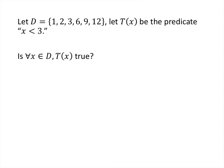Now we're looking at the same set but with quantified statements. The upside-down A symbol means 'every element,' so 'for all x in D.' Here we have T of x, which represents the statement 'x is less than 3.' The question is whether that's true. To figure out whether a for-all statement is true, we go through each element of the set and see if all of them make that predicate true.